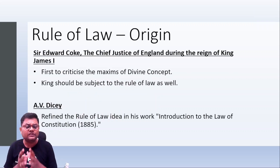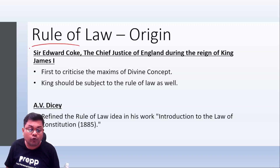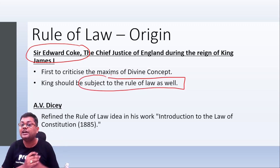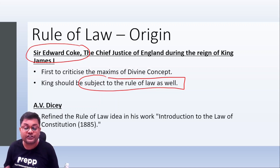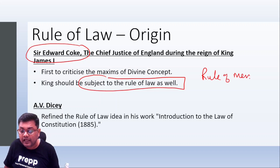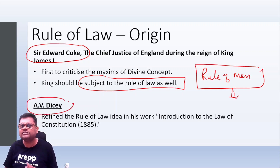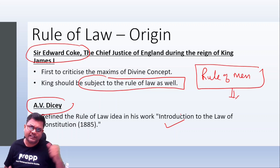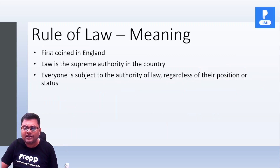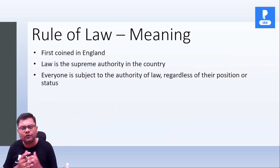And later on, this theory was criticized by Sir Edward Coke, who was the first to criticize this theory. This concept involves an element of arbitrariness. And later on, this concept was developed by A.V. Dicey, who was a British jurist. And unka bohot famous work tha 'Introduction to the Law of the Constitution', jis mein unhone ne rule of law ki baat ki thi. To abhi hum kya karenge, kafi detail mein samjhenge. What is the meaning of rule of law? Iske different elements kya hoote hai? Usko achhe se samjhein. Dicey — this term has its origin in England.